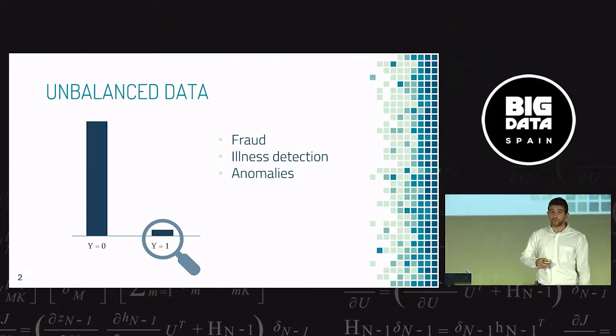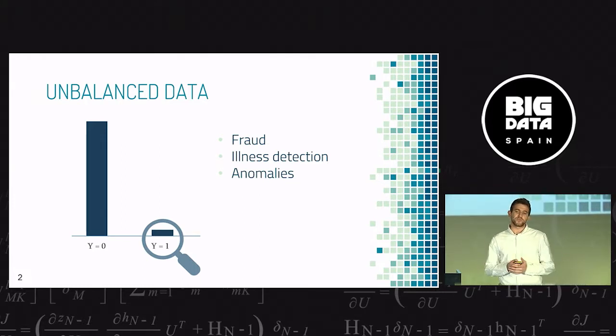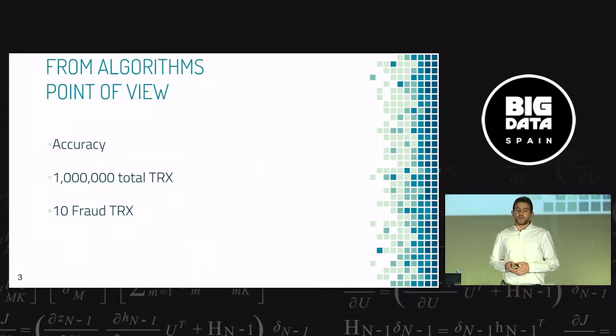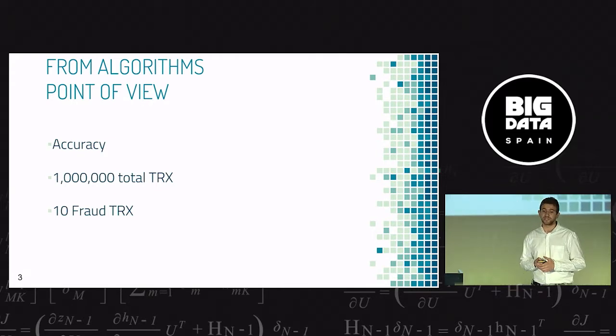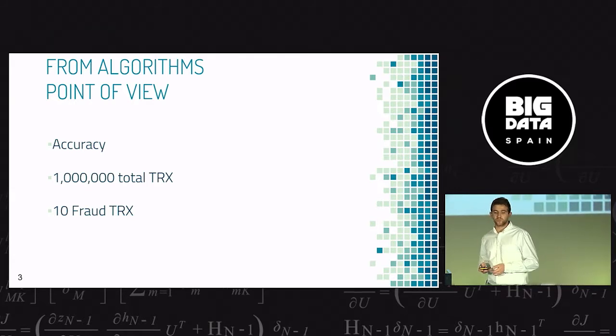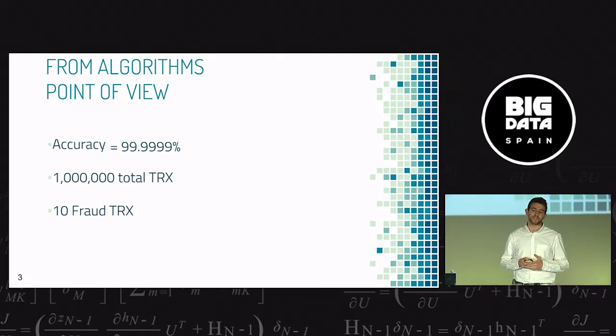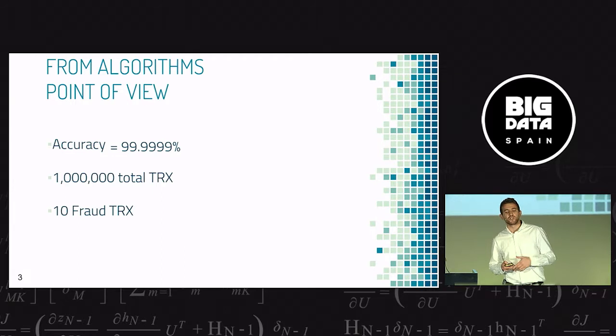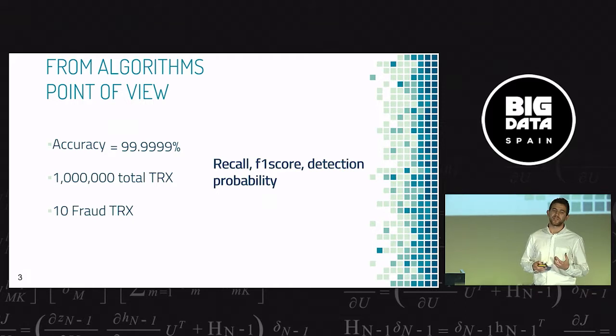For example, in fraud we can find millions of transactions but just a few of them are fraudulent. When we apply machine learning techniques we maximize the accuracy. Imagine we have one million transactions and just 10 are fraudulent. If we predict everything as a good transaction, we obtain 99% accuracy but we're not detecting anything. That's why we should use other metrics more related with detection probability.